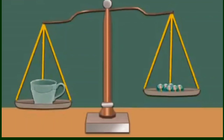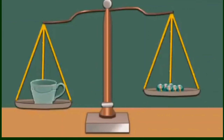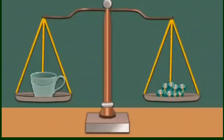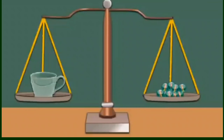Observe the balance now. Let us measure the weight of this cup using marbles. Put the cup on any of the pans. Now on the other pan put some marbles — the pans are still not at the same level. Put some more marbles till the pans come to the same level. You can see there are 10 marbles in the pan, so the weight of the cup is 10 marbles.